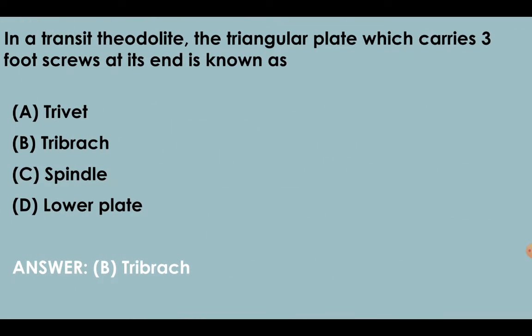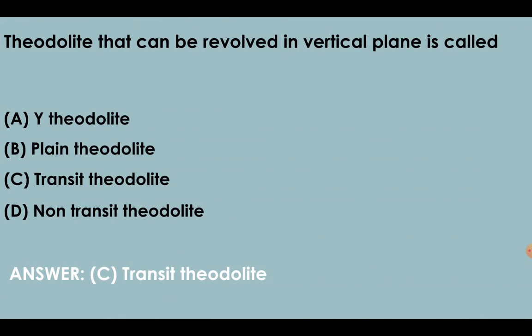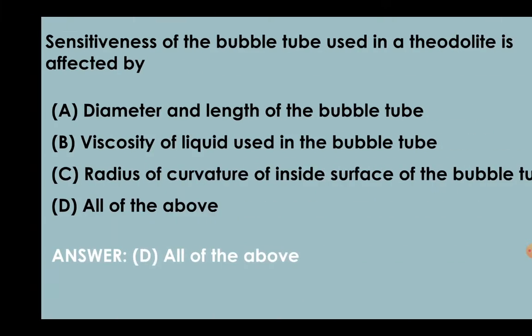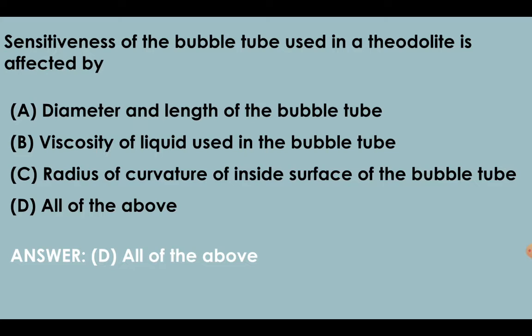In a transit theodolite, the triangular plate which carries three foot screws at its end is known as tribrach. Theodolite that can be revolved in vertical plane is called transit theodolite. Sensitiveness of the bubble tube used in the theodolite is affected by diameter and length of the bubble tube, viscosity of the liquid used inside the bubble tube, and radius of curvature of inside surface of the bubble tube.